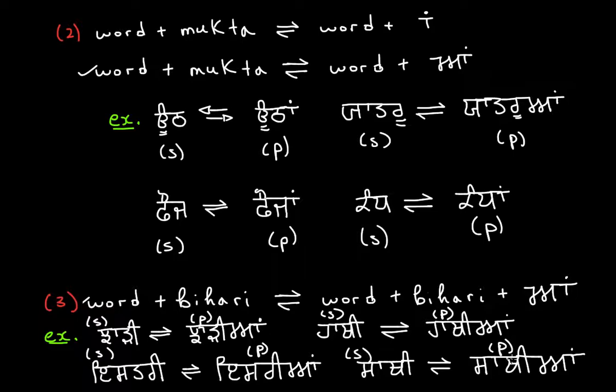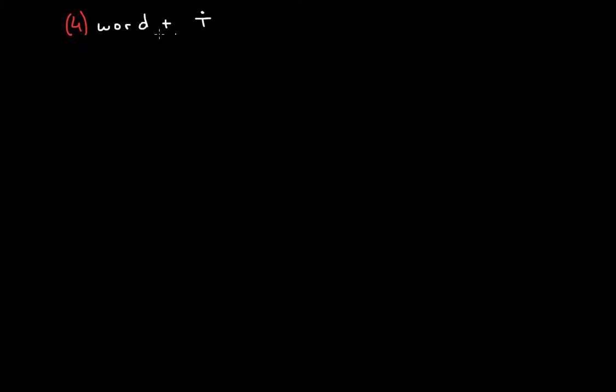Now for the fourth case: if we have a word that ends with a 'canna and bindi,' to make this plural, we keep the word and the 'canna with bindi,' but we add a 'vava' at the front of that addition. We normally also put a 'kanna' behind this little addition. Let's look at some examples.